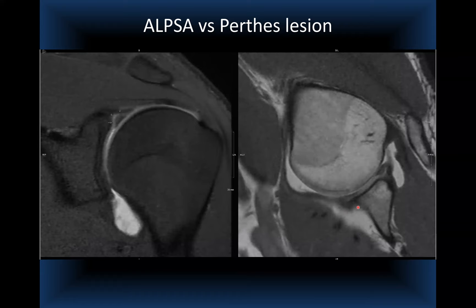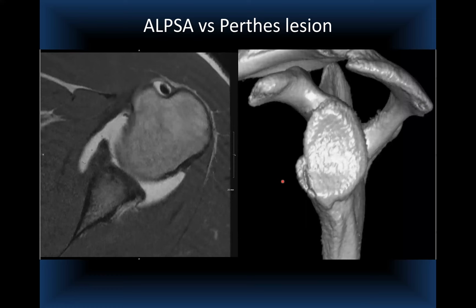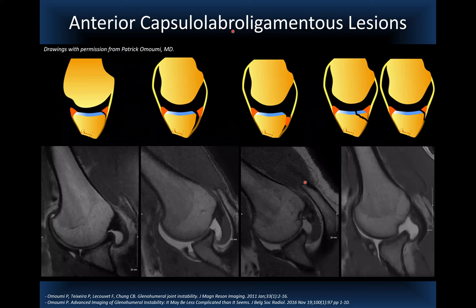CT confirms the stripped periosteal sleeve and 3D reconstruction demonstrates the findings. To summarize the spectrum: Perthes lesions are non-displaced and subtle; acute ALPSA has slightly more displacement; chronic ALPSA is bulbous and scarred down anteromedially; and Bankart lesions — soft tissue or bony — show complete periosteal disruption and detachment from the glenoid ring.